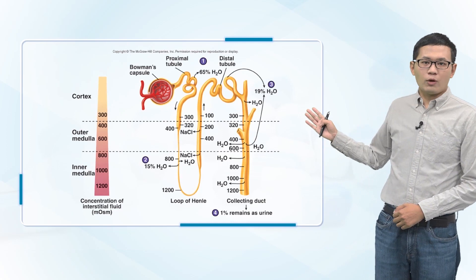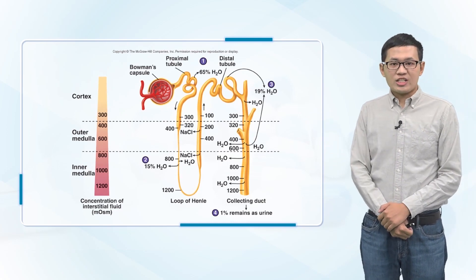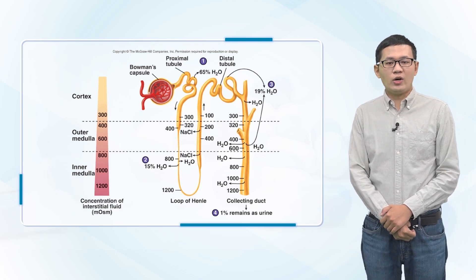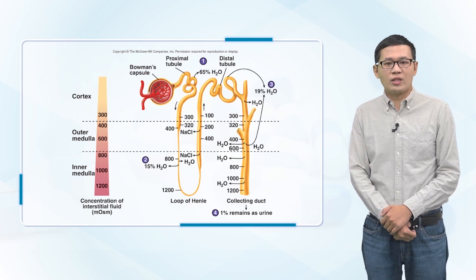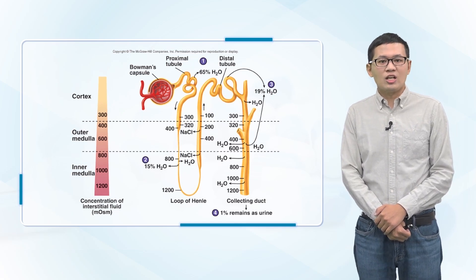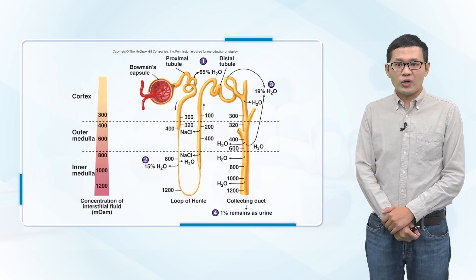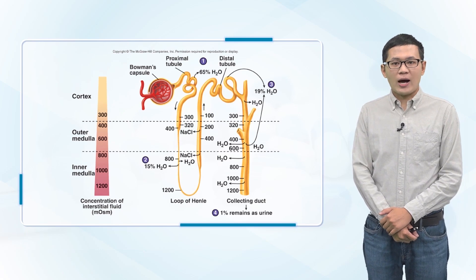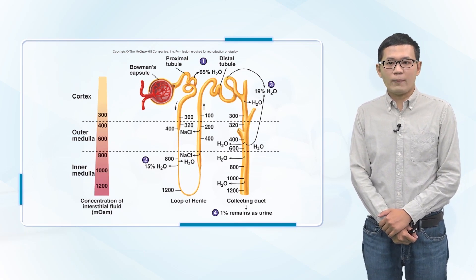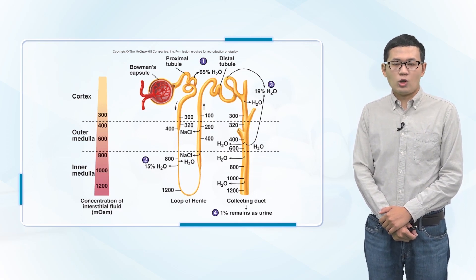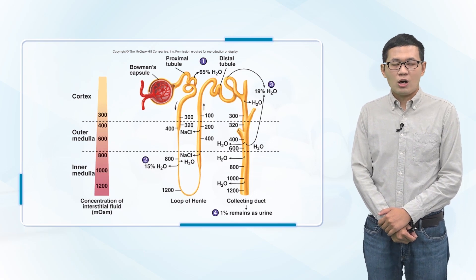The picture shows the formation of concentrated urine when ADH levels are high. Note that the fluid leaving the loop of Henle is diluted, but becomes concentrated as water is absorbed from the distal tubulars and collecting tubulars. With high ADH levels, the osmolality of the urine is about the same as the osmolality of renal medulla interstitial fluid in the papilla, which is about 1200 microosmosis per liter.